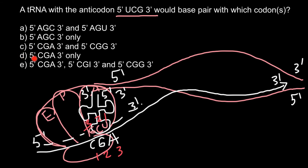Answer D gives us 5'-CGA-3', and answer C gives us 5'-CGG-3'. So which answer should we choose? The question is whether these two codons specify the same amino acid.